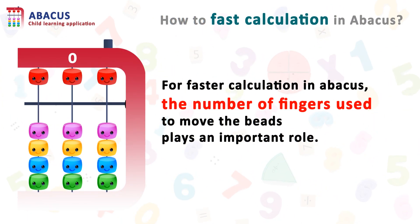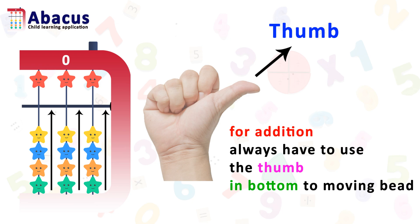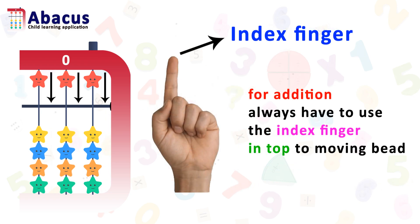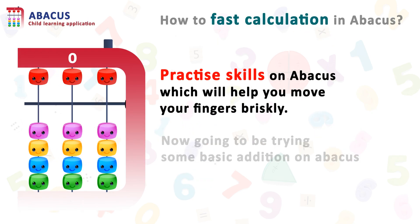For fast calculation in abacus, the number of fingers used to move the beads plays an important role. For addition, use your thumb at the bottom to move beads and at the top use index fingers to move beads.